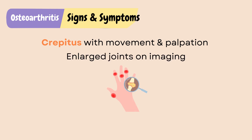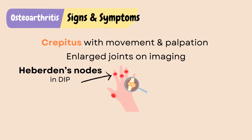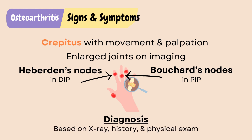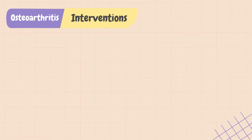Other characteristics of OA include enlarged joints on imaging and node formation in the fingers — Heberden's nodes in the distal interphalangeal joints, and Bouchard's nodes in the proximal interphalangeal joints. Diagnosis: unlike RA, there are no diagnostic labs because OA is not a systemic disease. Diagnosis is usually made based on x-ray, history, and physical exam.